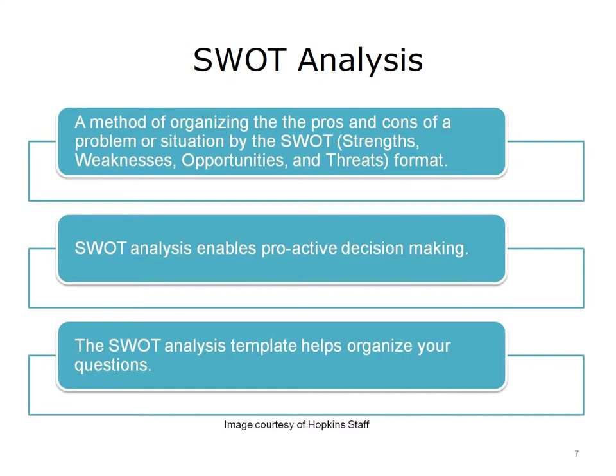In a SWOT analysis template, each letter — S, W, O, and T — is placed in one cell of a four-cell grid. Generally, each cell contains a series of questions that have been predetermined to help organize thinking and assessment. Some examples of these questions or aspects frequently assessed in a SWOT can be seen on the next slide.